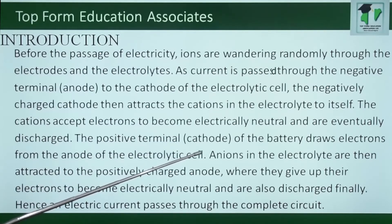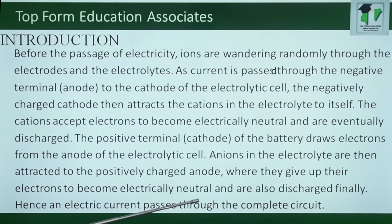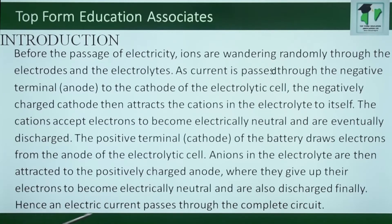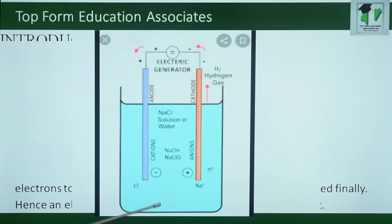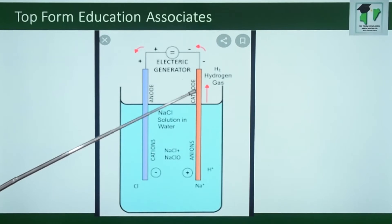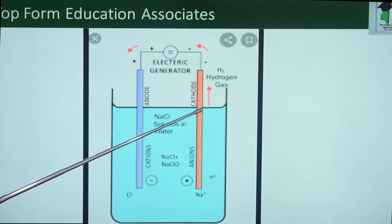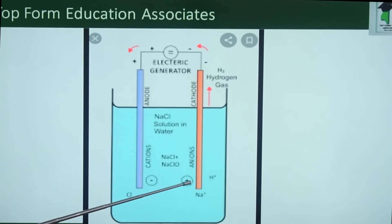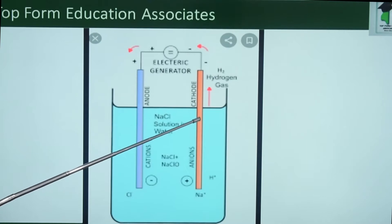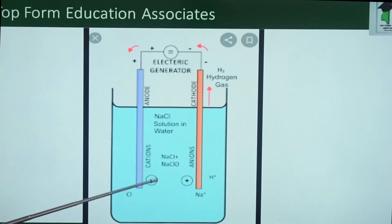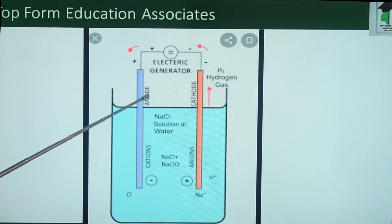The positive terminal, which is the cathode of the battery, draws electrons from the anode of the electrolytic cell. Anions in the electrolyte are then attracted to the positively charged anode, where they give up their electrons to become electrically neutral and are also discharged. Hence, an electric current passes through the complete circuit. This is what an electrolytic cell looks like. This is the cathode. Once the electrons pass through the anode to the electrolyte, this becomes negatively charged and attracts the positively charged ions to the cathode, while the negatively charged anion goes to the anode.